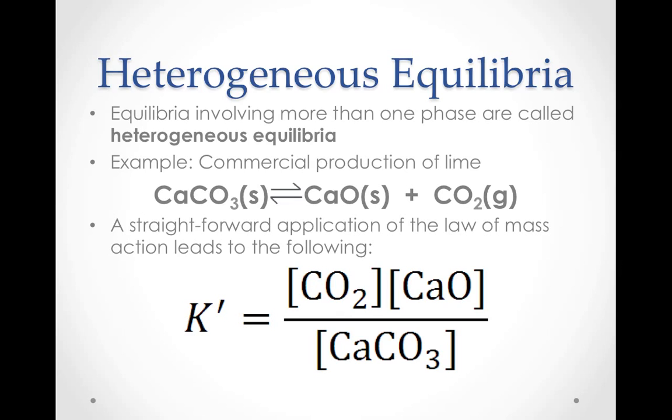For example, the commercial production of lime involves this equilibrium between solid calcium carbonate and solid calcium oxide and gaseous carbon dioxide. This is a heterogeneous equilibrium because it contains solids and gases.